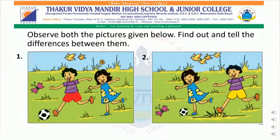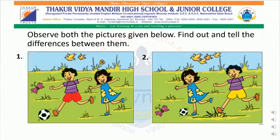In both the pictures, we can see children playing football. In the first picture, the ball is big. In the second picture, the ball is small. In the first picture, the butterfly is far away from the ball. In the second picture, the butterfly is nearer to the ball. In the first picture, the grass shown in the area where the children are playing is less. Whereas, in the second picture, it is more.